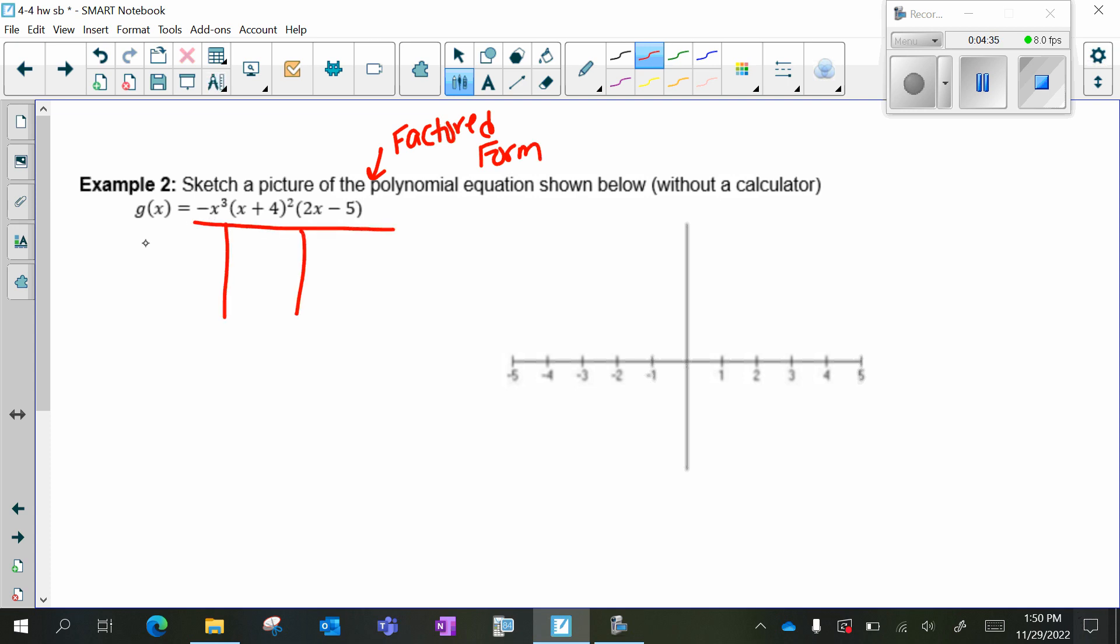My first piece is -x³ = 0, which just tells me that x = 0. My exponent is my multiplicity of three, which means it's going to squiggle at three.